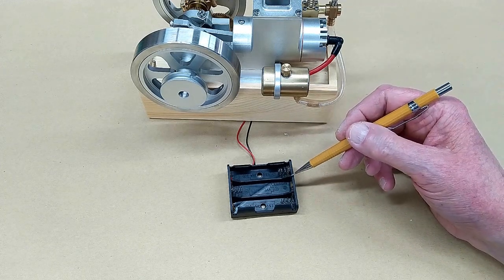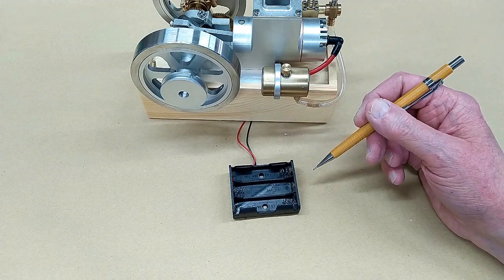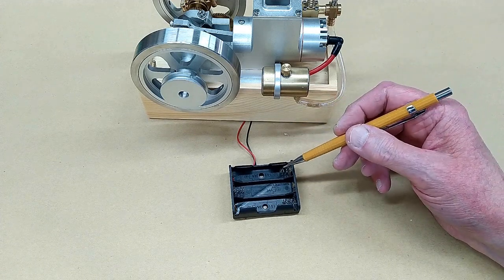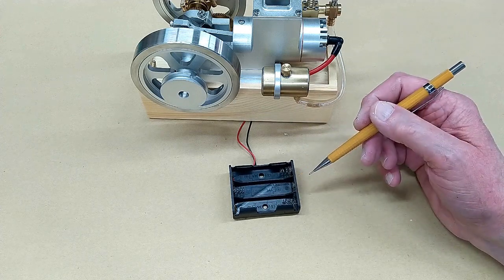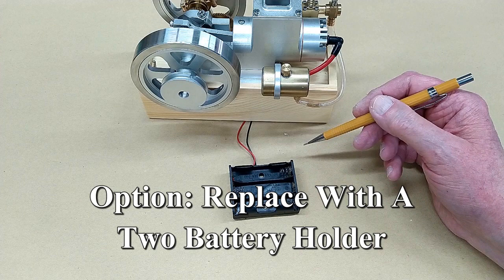And it appears to come back to the voltage that's going into the ignition module. Instead of using three AA batteries, if we can use just two, it drops the voltage and that problem seems to go away.